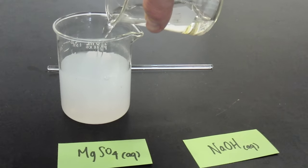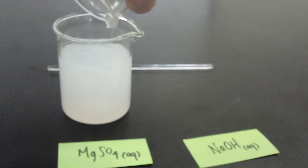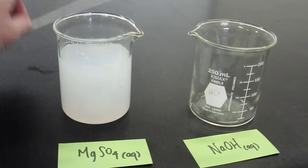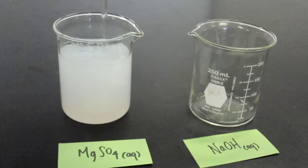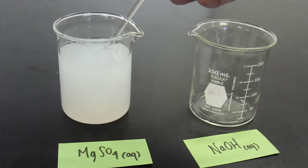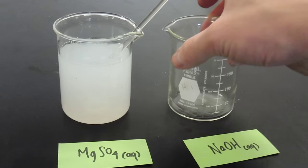You can see a white cloudiness forming right away. What that cloudiness actually is, is a solid produced from this reaction, and it's called a precipitate.